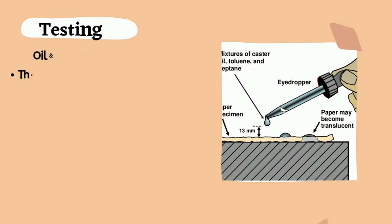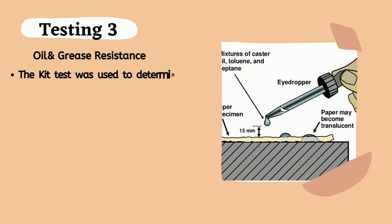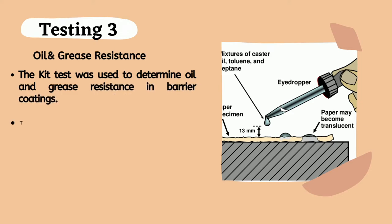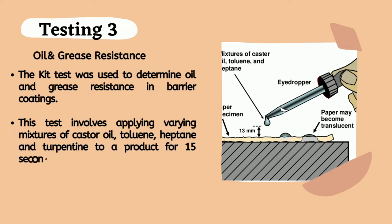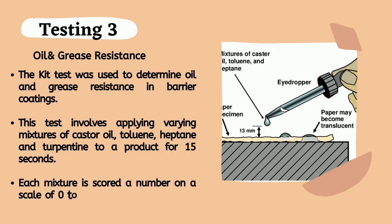Oil and grease resistance in a barrier coating was traditionally measured by what is known as the KIT test. This test involves applying varying mixtures of castor oil, toluene, heptane, and turpentine to a product for 15 seconds. Each mixture is scored on a scale of 0–12, from least aggressive to most aggressive. The highest numbered mixture that does not stain the surface is reported as the KIT rating. Hot oils and greases are also used for testing, which better reflect how well a synthetic polymer-based barrier coating resists actual greases that food packaging typically contacts.